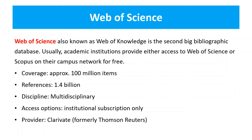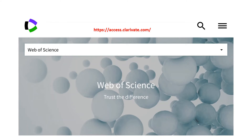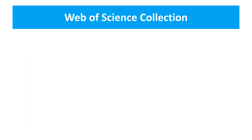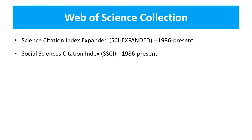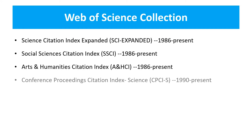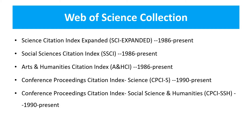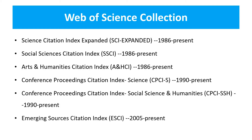Web of Science was developed by Thomson Reuters earlier; now it is maintained by Clarivate. This is the window screen of Web of Science. There are different types of Web of Science collection criteria: the Science Citation Index Expanded (starting from 1986 to present), Social Sciences Citation Index, Arts and Humanities Citation Index, Conference Proceedings Citation Index, and the Emerging Sources Citation Index.